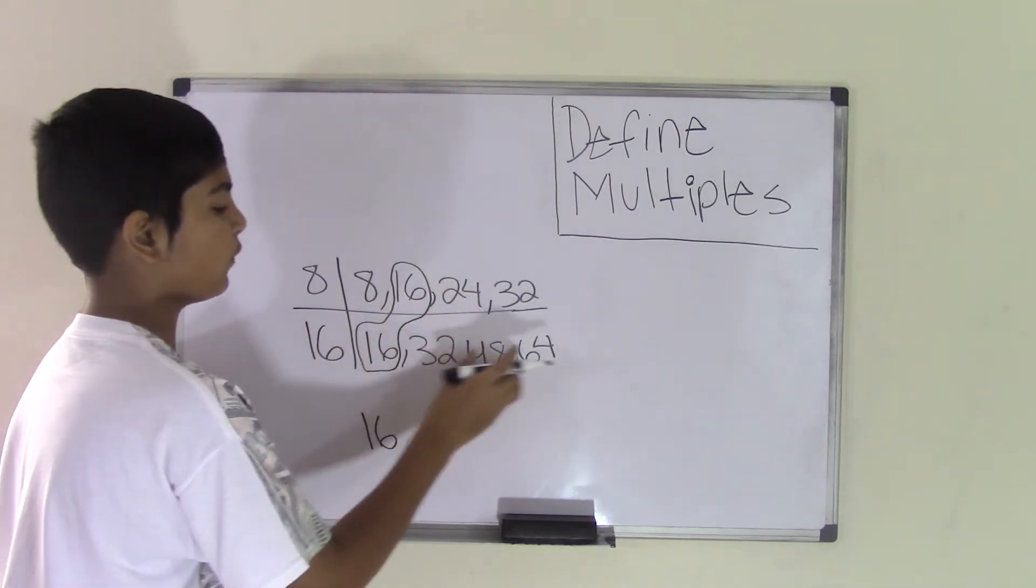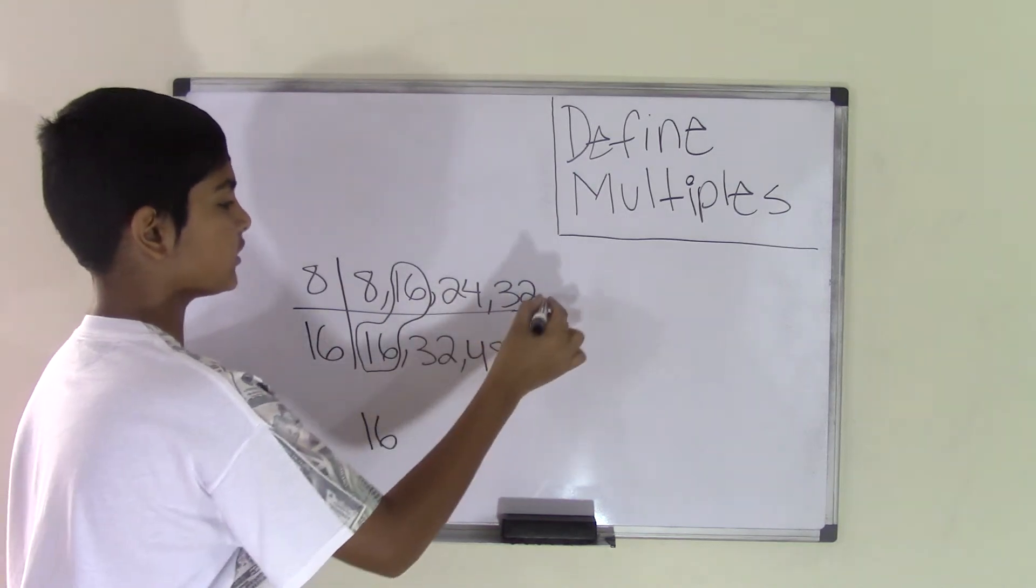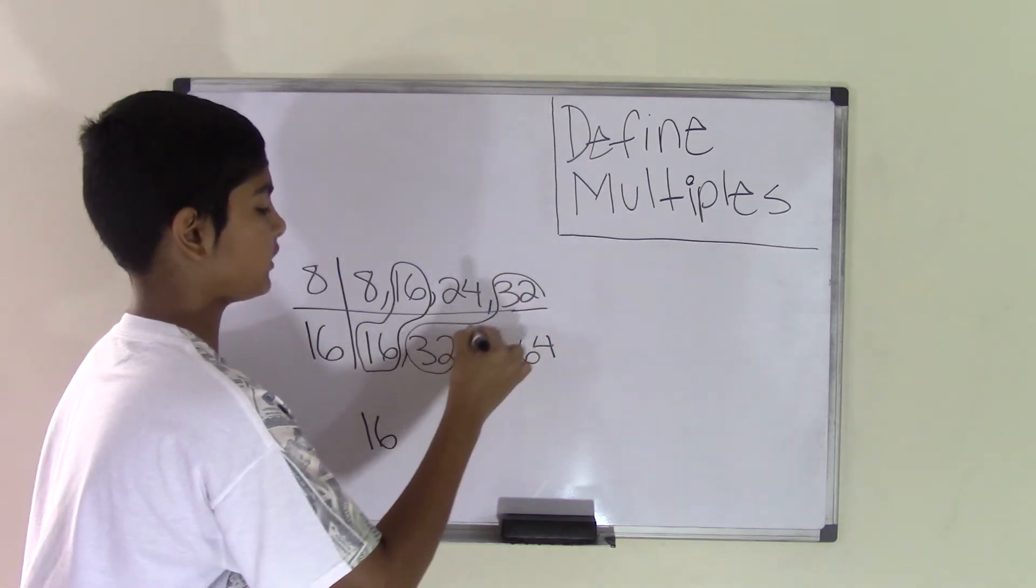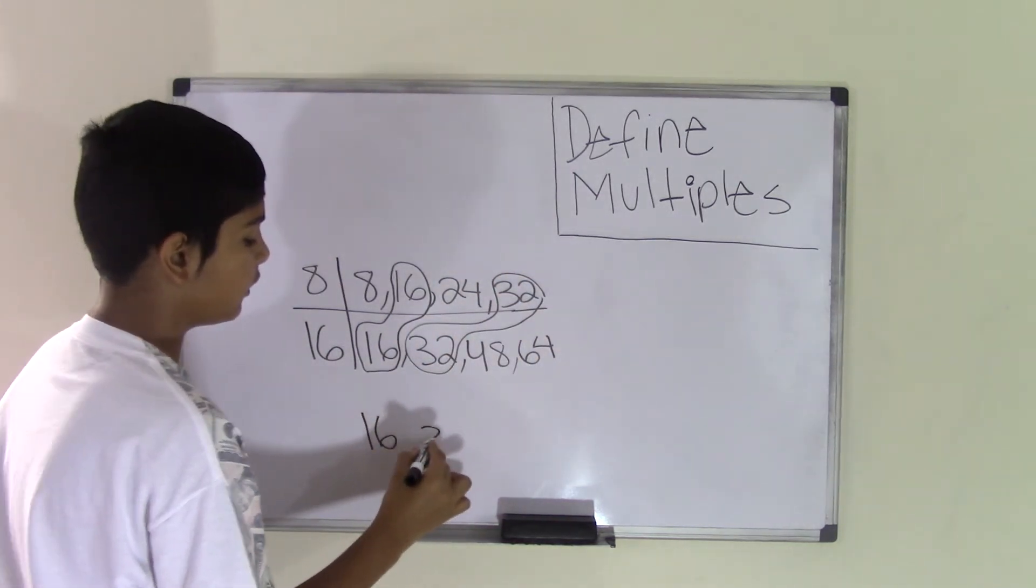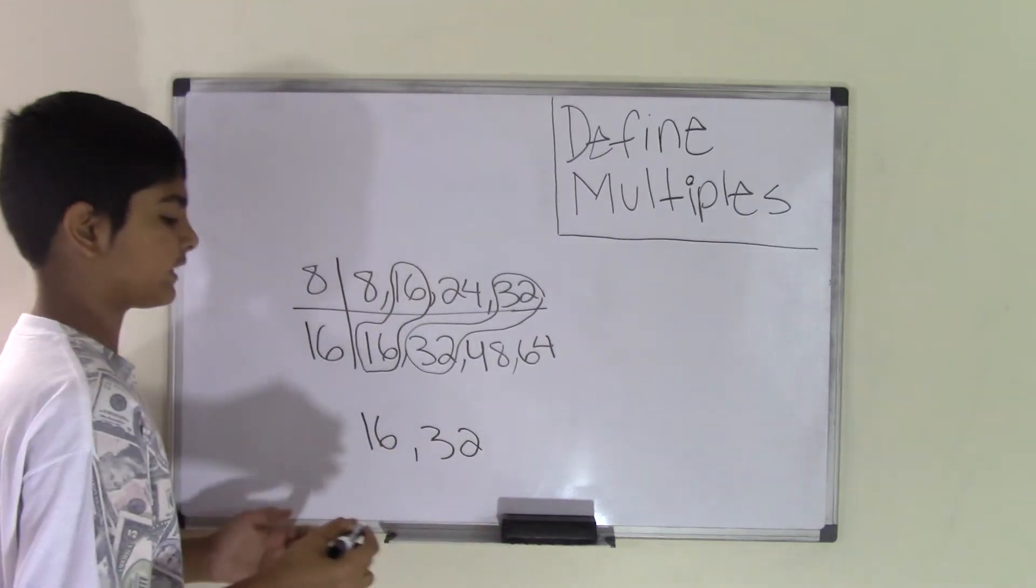There are no 24s in the multiples of 16. There is 32 in the multiples of 16. So, 32 is another common multiple for the two numbers 8 and 16.